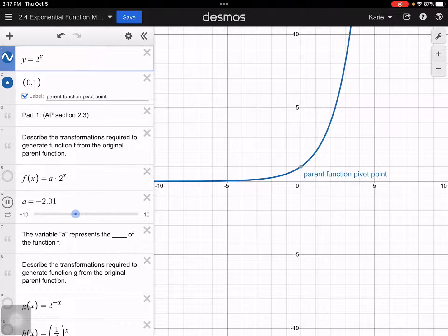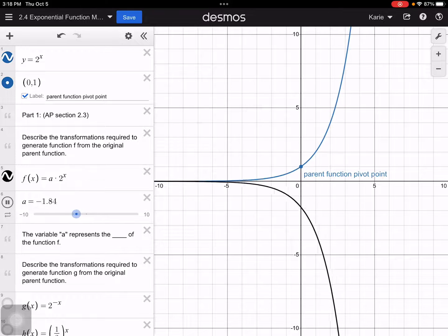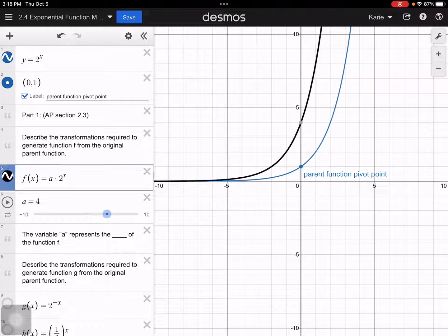The first thing we want to do is we want to see what happens when I change my, when I have an a value out front. So if you notice, oh, you have to turn on the graph first. Let's pause that for a second. If I turn on this graph, when my a value changes, you'll notice that it's a vertical stretch. Now if it's negative, there's also this reflection over the x-axis. And so let's pause that for just a second, pause it right here.